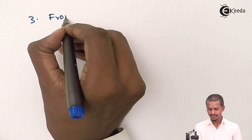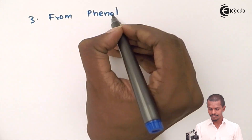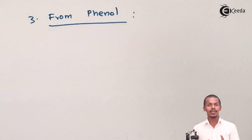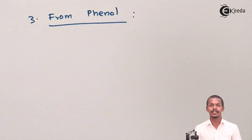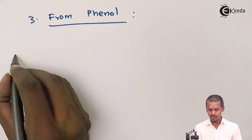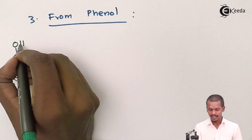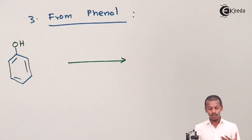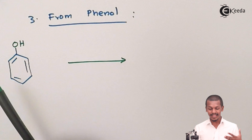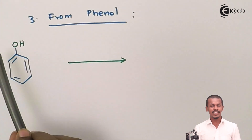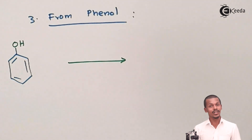Now we are going to prepare benzene from phenol. Phenol is a name accepted by IUPAC as well. Phenol consists of a hydroxyl group — that is an OH group — attached to a benzene ring. To prepare benzene from phenol, we do not need the OH group; we need only the phenyl group and a hydrogen atom, so we must remove the oxygen atom.